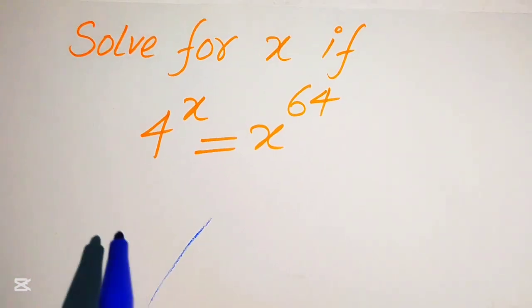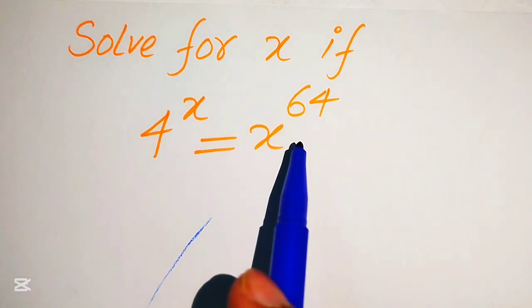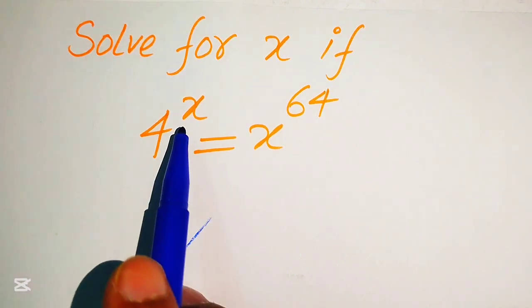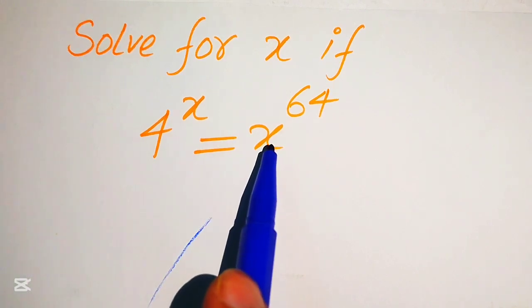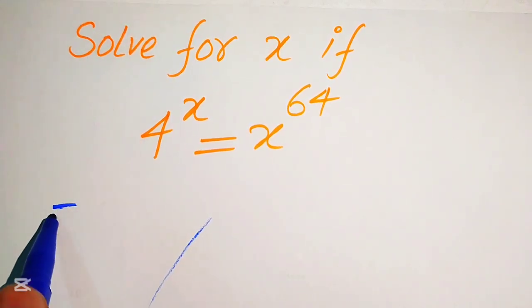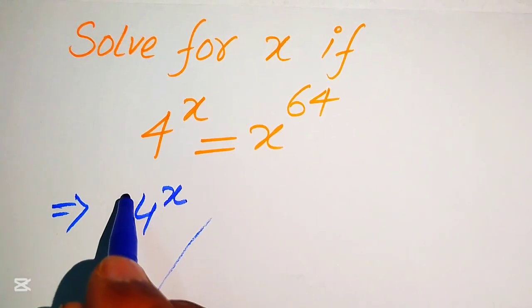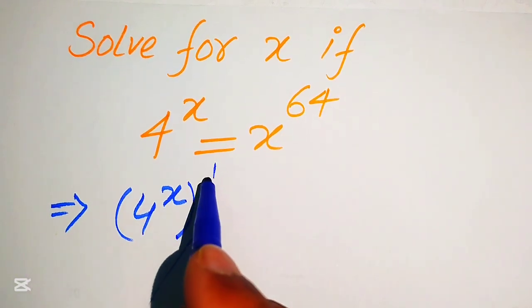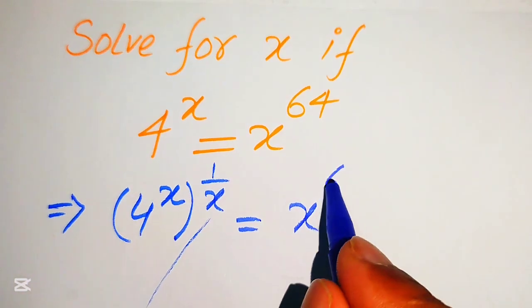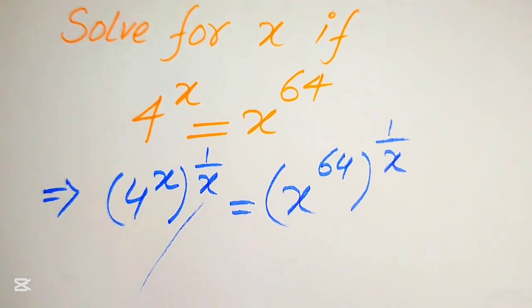We need to move all the variable terms to the right hand side and the constant term to the left hand side. First, we need to move x to the right hand side. To eliminate x from the left hand side, we take the xth root on both sides. So it will be written as 4 to the power of x, whole power 1 over x, equals to x to the power of 64, whole power 1 over x.